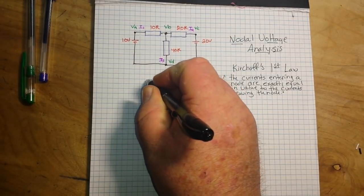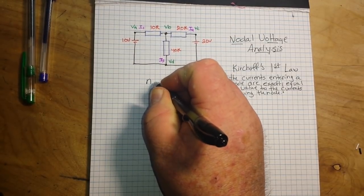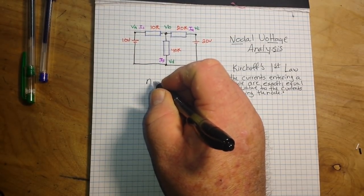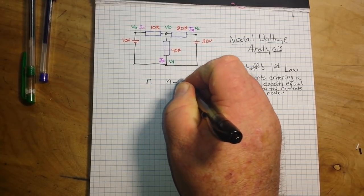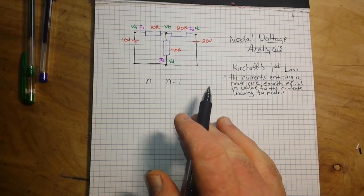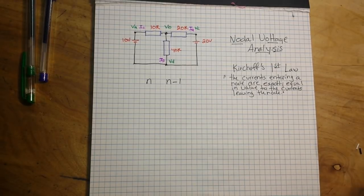So if there are n number of nodes in the circuit, there will be n minus one independent nodal equations. And these alone are all we need. So let's talk about this circuit that I've drawn up here.